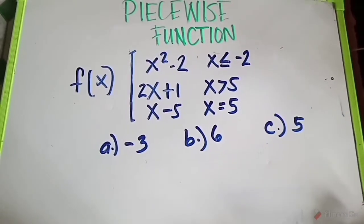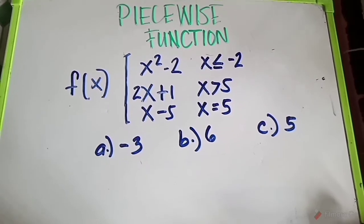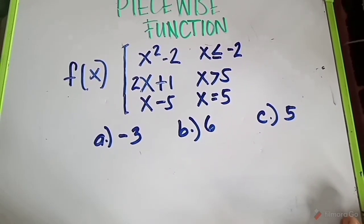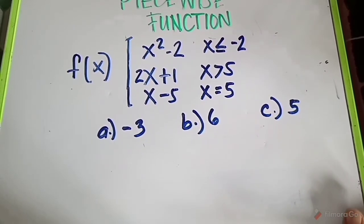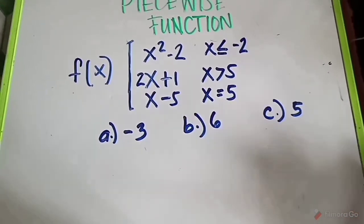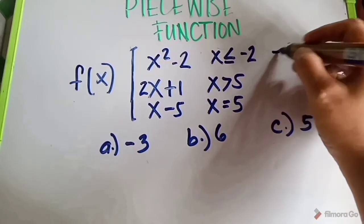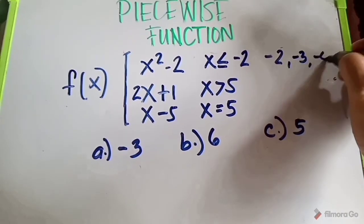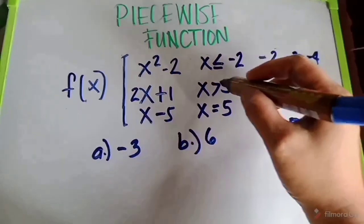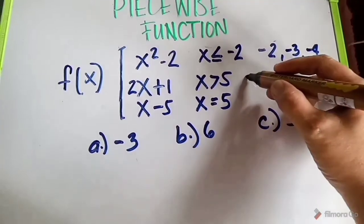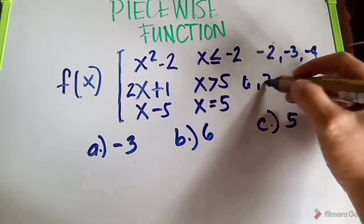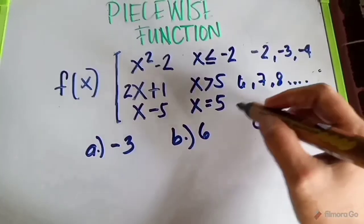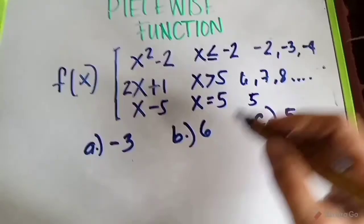Let's proceed to another set of examples of piecewise function. Our given is: f of x equals x squared minus 2 for x less than or equal to negative 2 — so those numbers are negative 2, negative 3, negative 4, and so on. Then 2x plus 1 for x greater than 5 — so those numbers are 6, 7, 8, and so on. And x minus 5 for x equals 5 — automatically, 5 only.